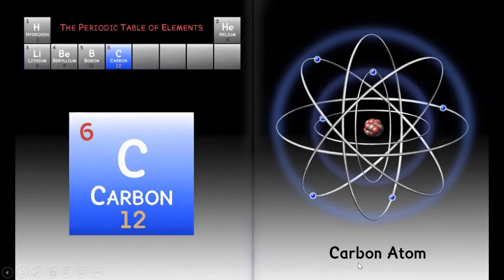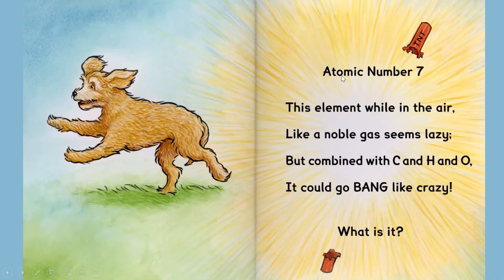Carbon. Carbon atom. Atomic number seven. This element while in the air, like a noble gas seems lazy, but combined with C and H and O, it could go bang like crazy. What is it?